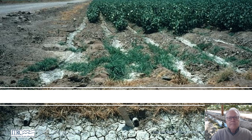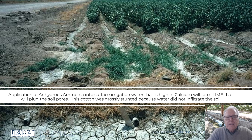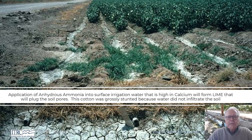Here is a case where anhydrous ammonia was applied to irrigation water in furrows. The cotton wasn't doing well, so I pulled some plants out and found the roots were very stunted and didn't go down deep at all. Looking around, I realized the furrows were cemented in. There was an anhydrous ammonia tank nearby — sure enough, the anhydrous ammonia had reacted in the water, the calcium fell out, and it basically cemented the furrows so water couldn't infiltrate.